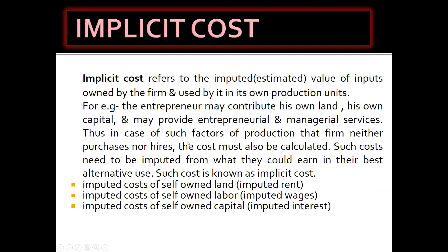Implicit cost refers to the imputed or estimated values of inputs owned by the firm and used by it in its own production units. For example, an entrepreneur may contribute his own land, his own capital, and may provide entrepreneurial and managerial services. For such factors of production that the firm neither purchases nor hires, the cost must also be calculated — imputed from what they could earn in their best alternative use. Such cost is known as implicit cost, for example: imputed rent for self-owned land, imputed wages for self-owned labor, and imputed interest for self-owned capital.